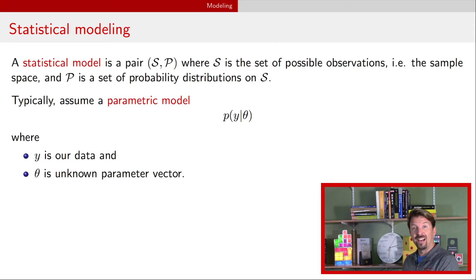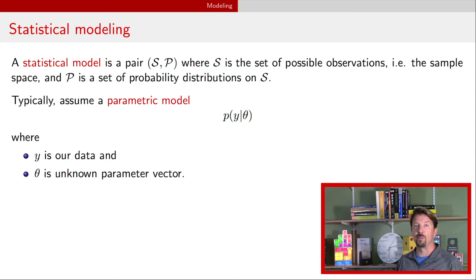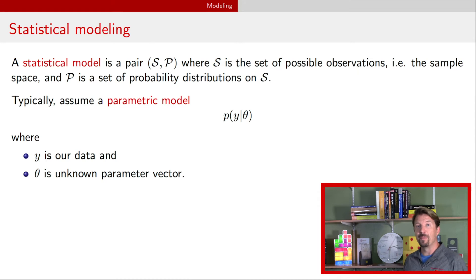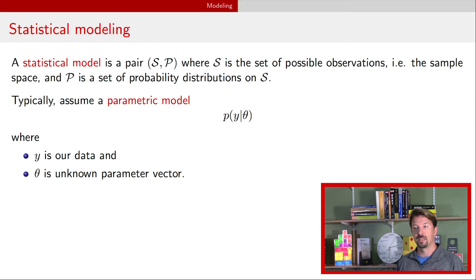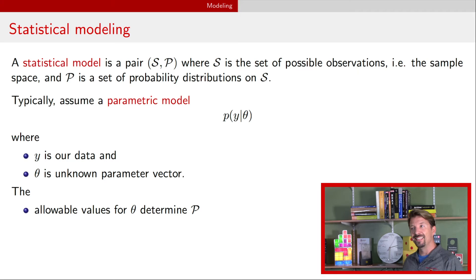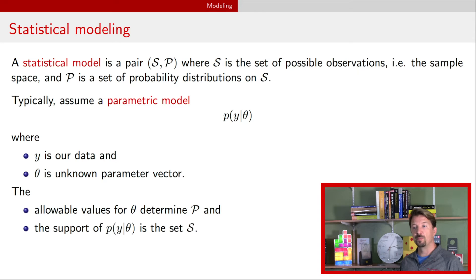This is a probability model for our observed data y given a value for a parameter theta. Going forward, the whole purpose of what we're going to be doing in statistical inference is to make statements about these unknown parameters theta. So to bring it back to the formal definition, script P determines the possible values for our parameter vector theta, and script S is the support for this particular parametric model.